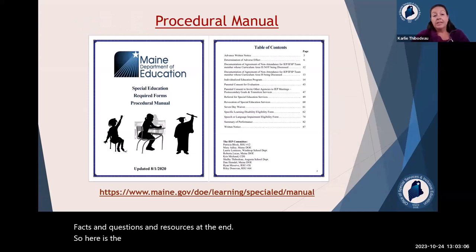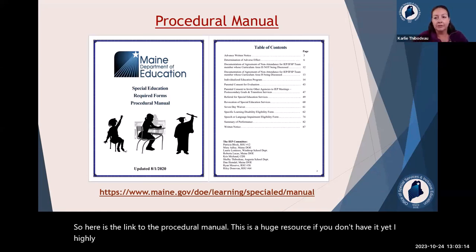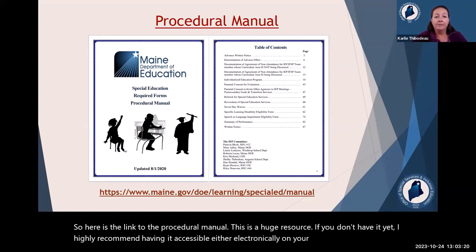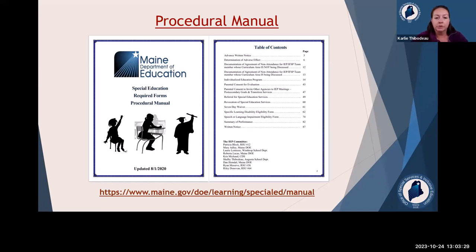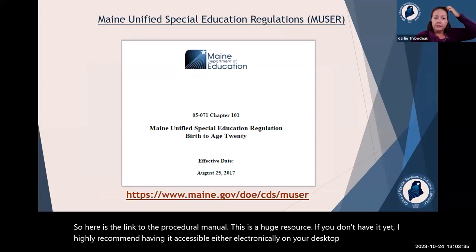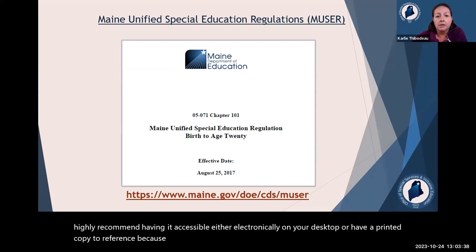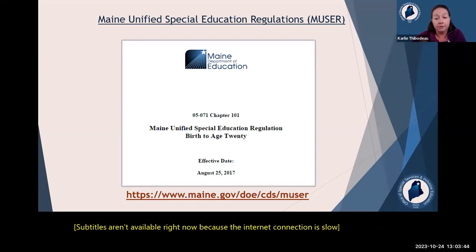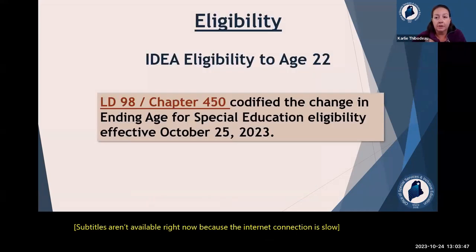Here is a link to the procedural manual — a huge resource. If you don't have it yet, I highly recommend having it accessible electronically or as a printed copy, because it goes through all the special ed forms, gives instructions, directions, and examples. The Maine Unified Special Education Regulations, or MUSER, is another link — anything you need to know about special ed law is there, though it's not as user-friendly as the procedural manual.